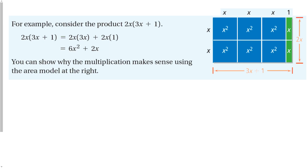Let's consider the product 2x and (3x + 1). The distributive property works by taking the term in front and multiplying it by both things inside the parentheses. So 2x times (3x + 1) becomes 2x times 3x, plus 2x times 1, giving me 6x squared — the x times x gives me x squared — plus 2x.